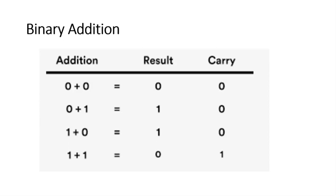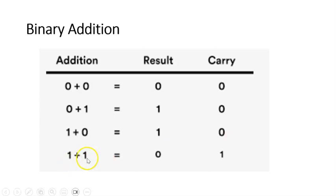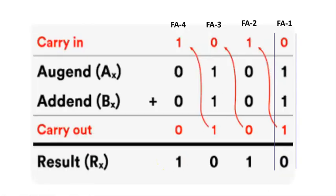All of you are well aware of this basic binary addition. Whenever you are adding 0 and 0, you get sum as 0 and carry as 0. Whenever you are adding 0 plus 1 or 1 plus 0, you get result as 1 and carry as 0. However, whenever you are adding 1 plus 1, you get sum as 0 and carry as 1. This is very much required to understand before we go ahead.